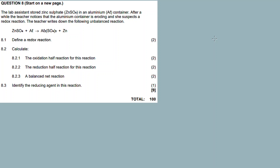Okay, let me open the question paper. The lab assistant stored zinc sulfate in an aluminum container. After a while, the teacher noticed that the aluminum container is eroding, and she suspects a redox reaction. The teacher writes down the following unbalanced equation.